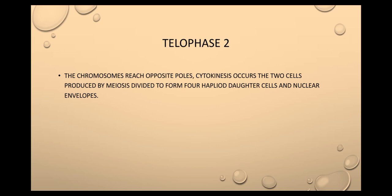And the last phase is telophase two. The chromosomes reach opposite poles, cytokinesis occurs, and the two cells produced by meiosis one divide to form four haploid daughter cells with nuclear envelopes.